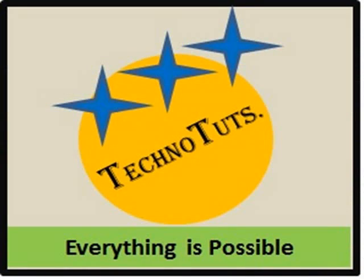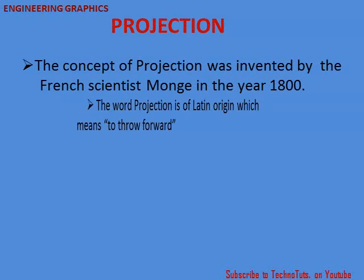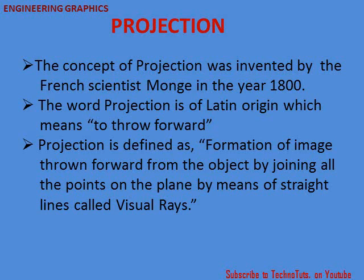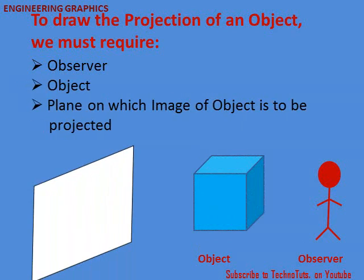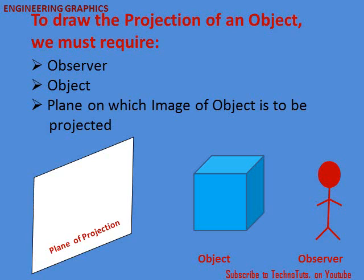Welcome to Technotuts, where everything is possible. Today we are going to discuss the topic of projection, which is from engineering graphics. The concept of projection was invented by French scientist Monge in the year 1800. The word projection is of Latin origin, which means to throw forward. Projection is defined as the formation of an image thrown forward from the object by joining all the points on the plane by means of straight lines called visual rays. To draw the projection of an object, we require three things: the observer, the object, and the plane on which the image of the object is to be projected, that is the plane of projection.